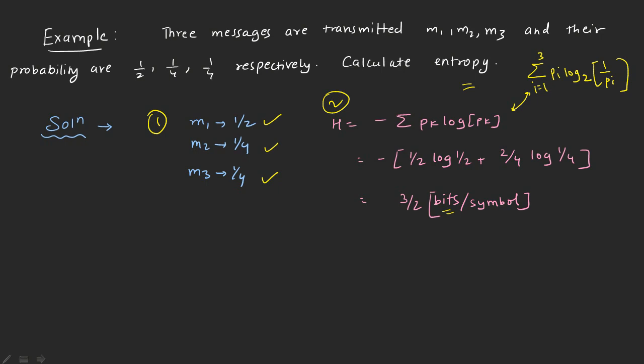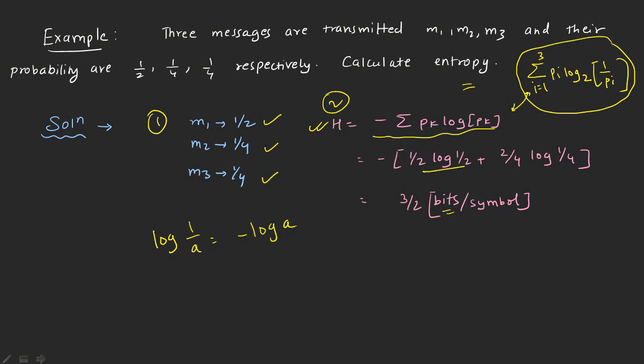There are two ways to write the formula. Using the log property — log of 1 by a equals minus log of a — you can also write it as the negative summation form. Substituting for i equal to 1 separately, and clubbing i equal to 2 and i equal to 3 together because those values are the same, and solving gives the answer of 3/2 bits per symbol.